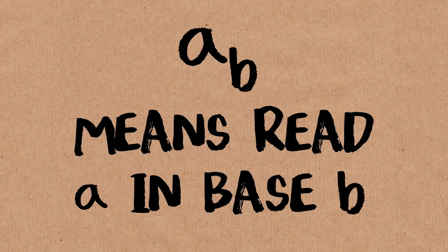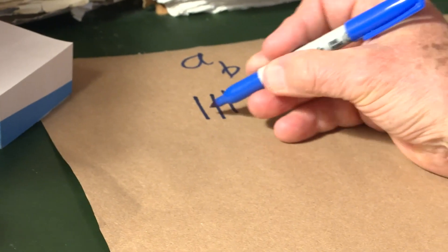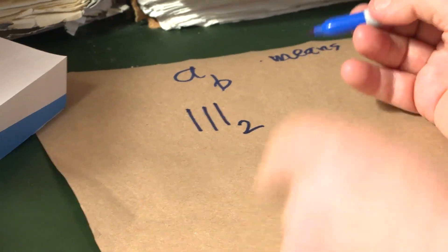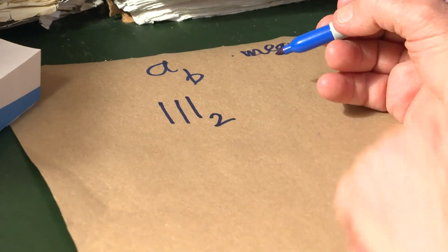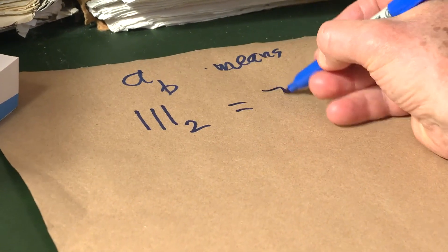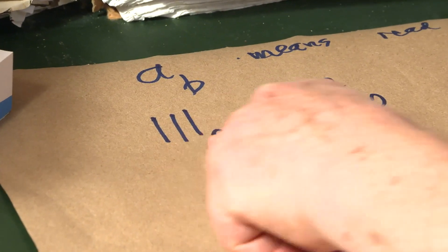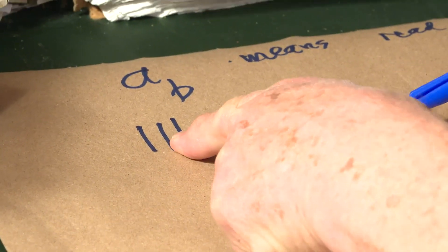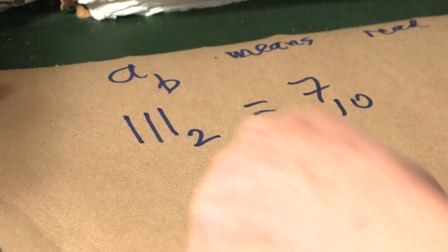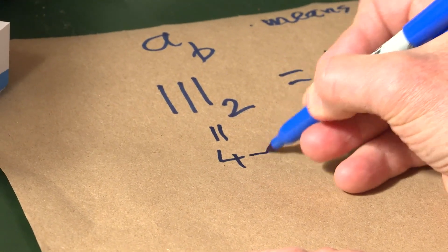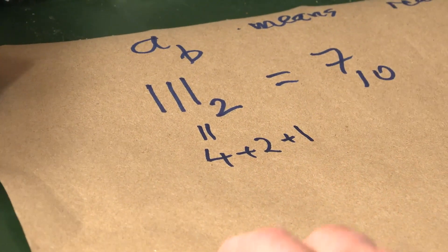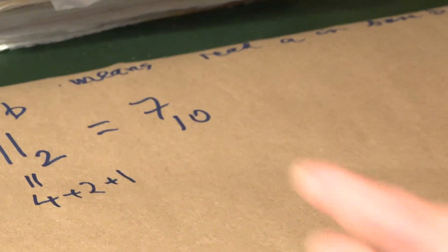For instance, in binary notation, 7 is 1 1 1. So you would write 1 1 1 sub 2, which means interpret 1 1 1 in base 2, is equal to 7 in base 10. And the way you read this, you say, that 1 is a 1, that 1 is a 2, and that 1 is a 4. So this is 4 plus 2 plus 1, which is indeed 7. So that's the notation.